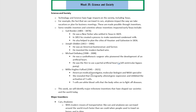That's what this class is trying to talk about. Technology and science have huge impacts on the society, including the state of Texas. For example, the fact that we can travel in cars and airplanes impacts the way we take vacation and plan for business meetings. All these are made possible through inventions. Some notable inventors and scientists whose inventions impacted early Texas are what we are going to be talking about today.